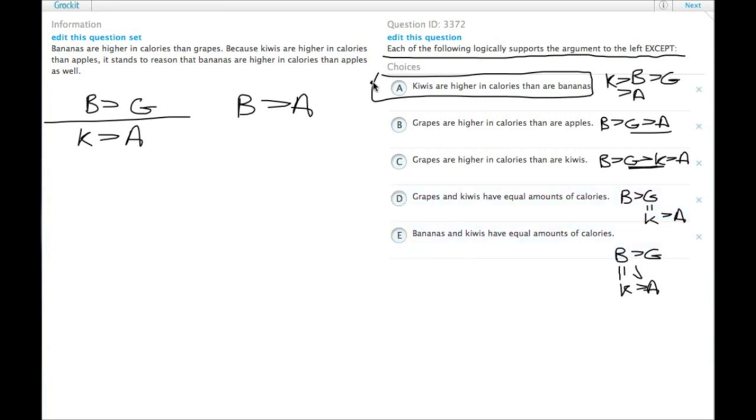So, all of the answer choices except choice A, connect bananas to apples, A leaves the connection uncertain.